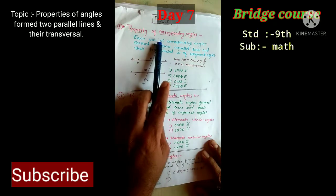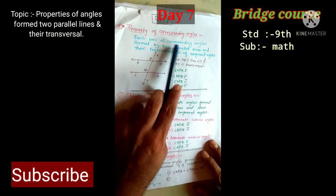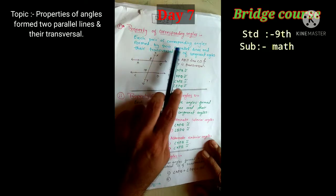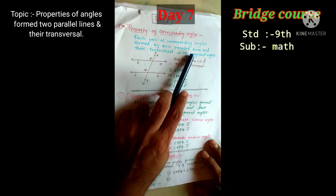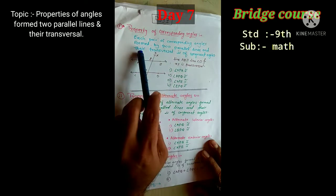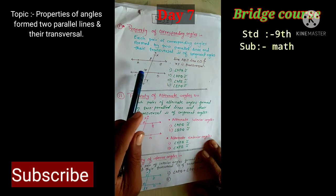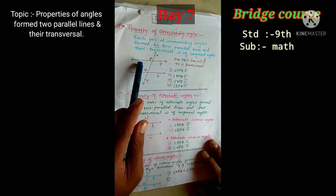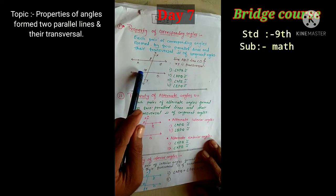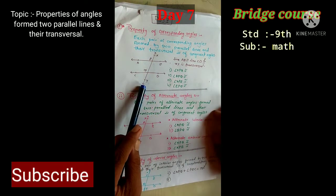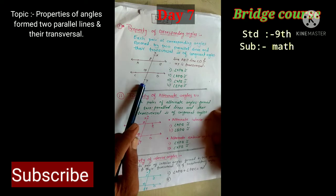Each pair of corresponding angles formed by two parallel lines and their transversal is a congruent angle. When two parallel lines are cut by one transversal, the result is called pairs of corresponding angles.